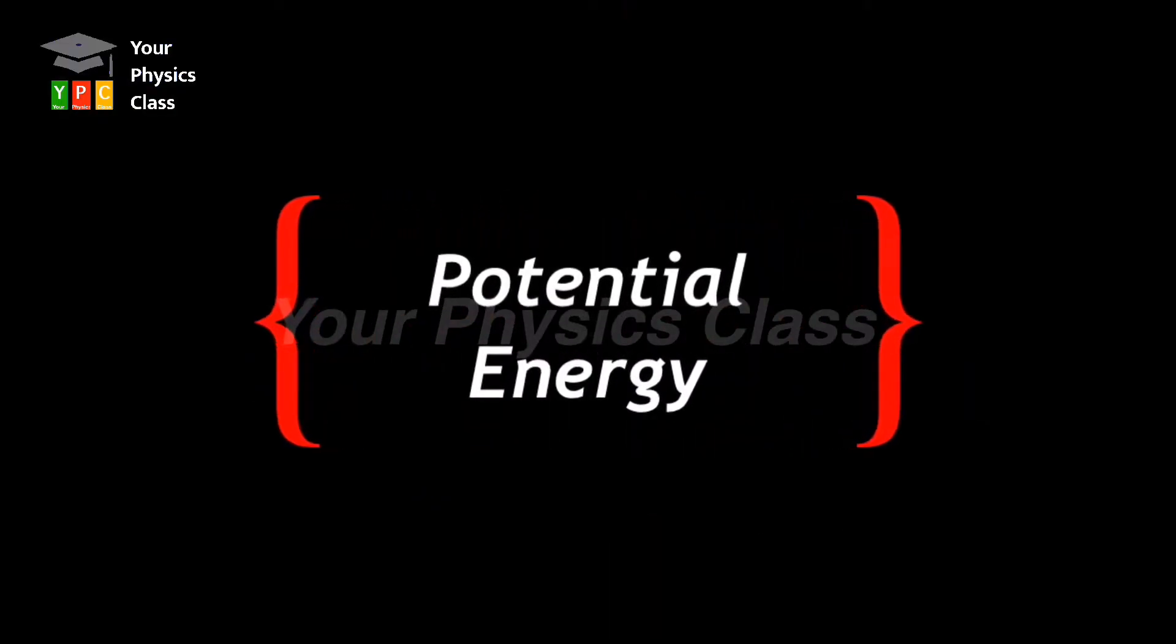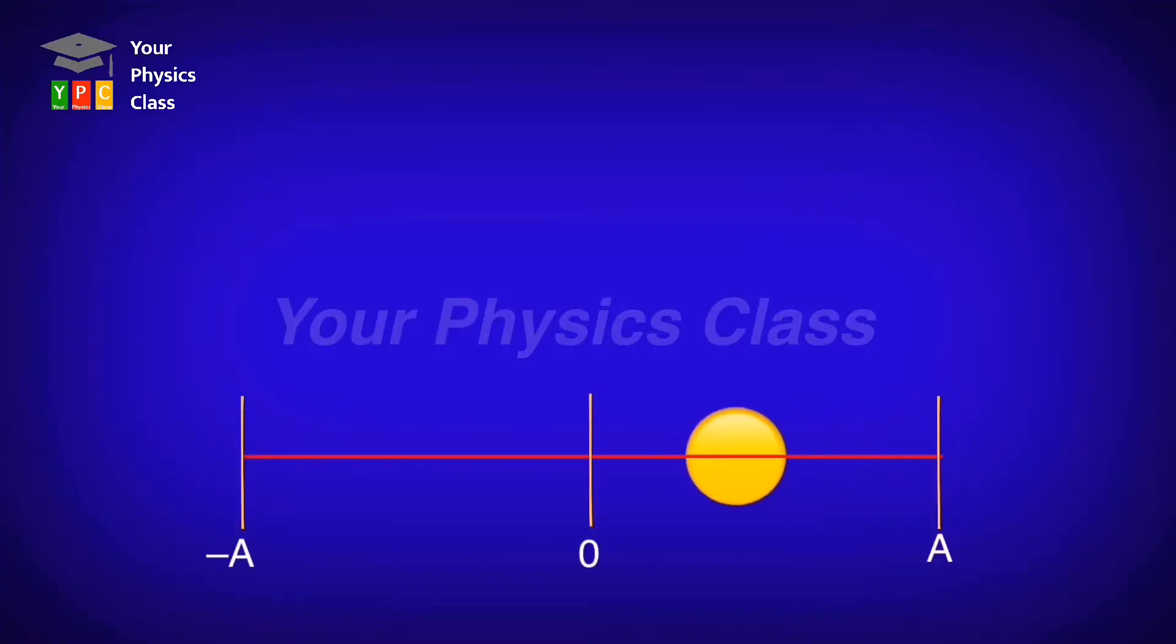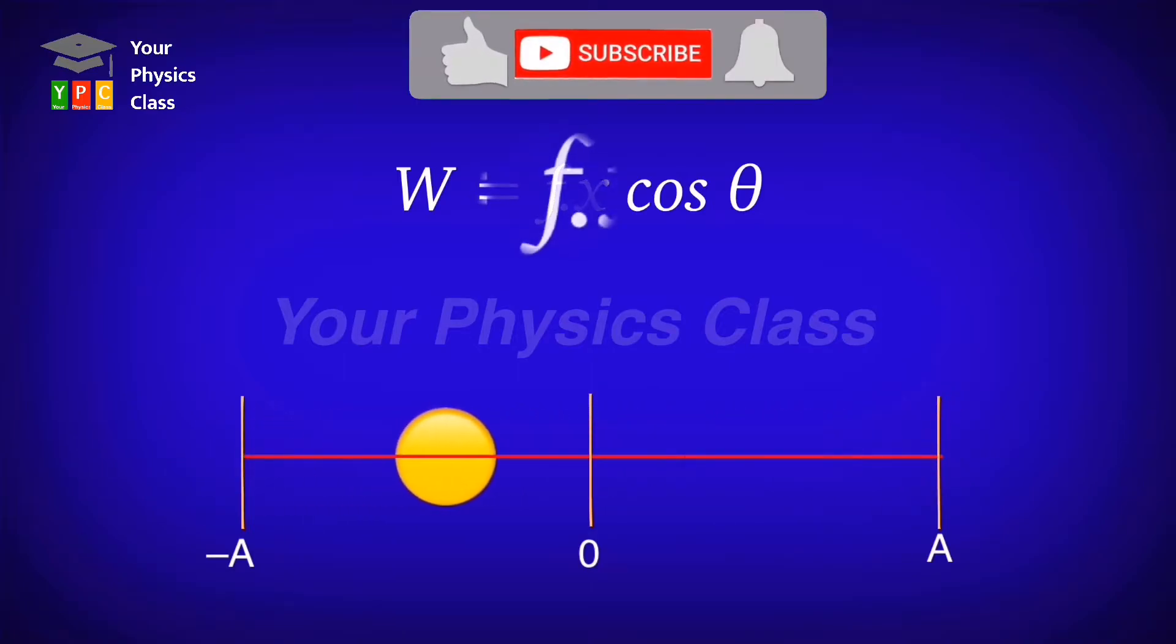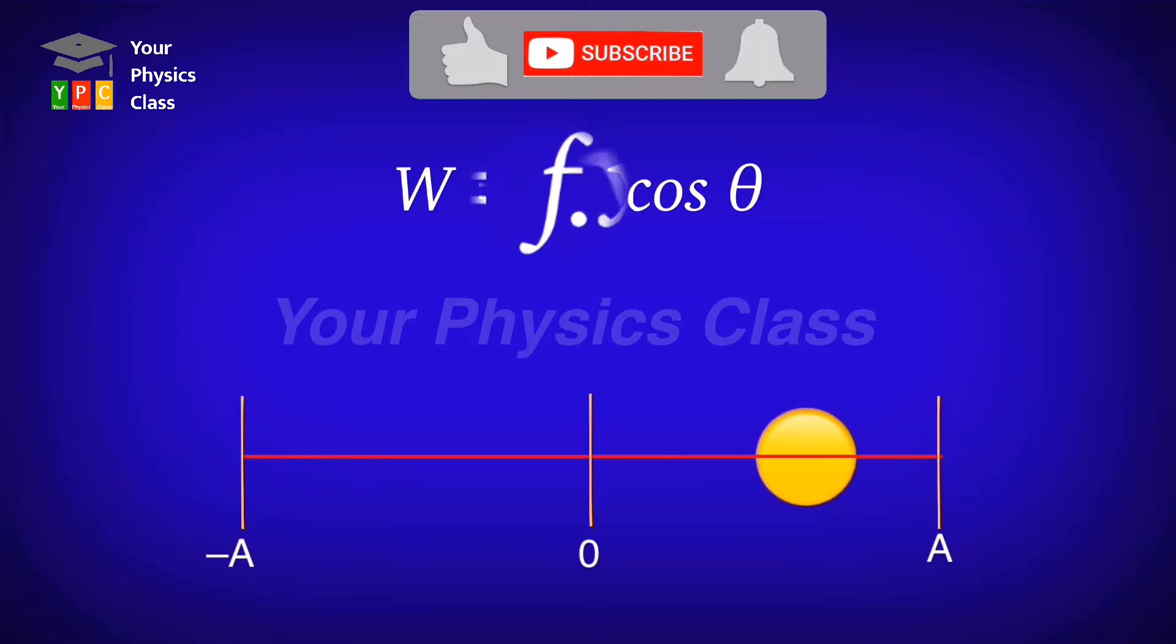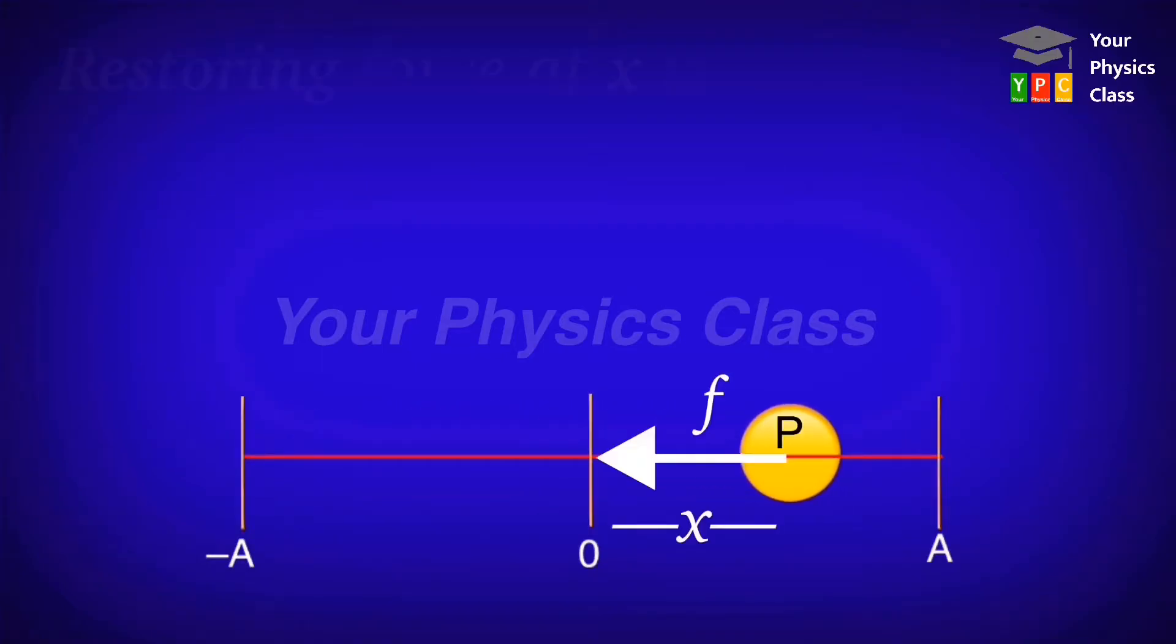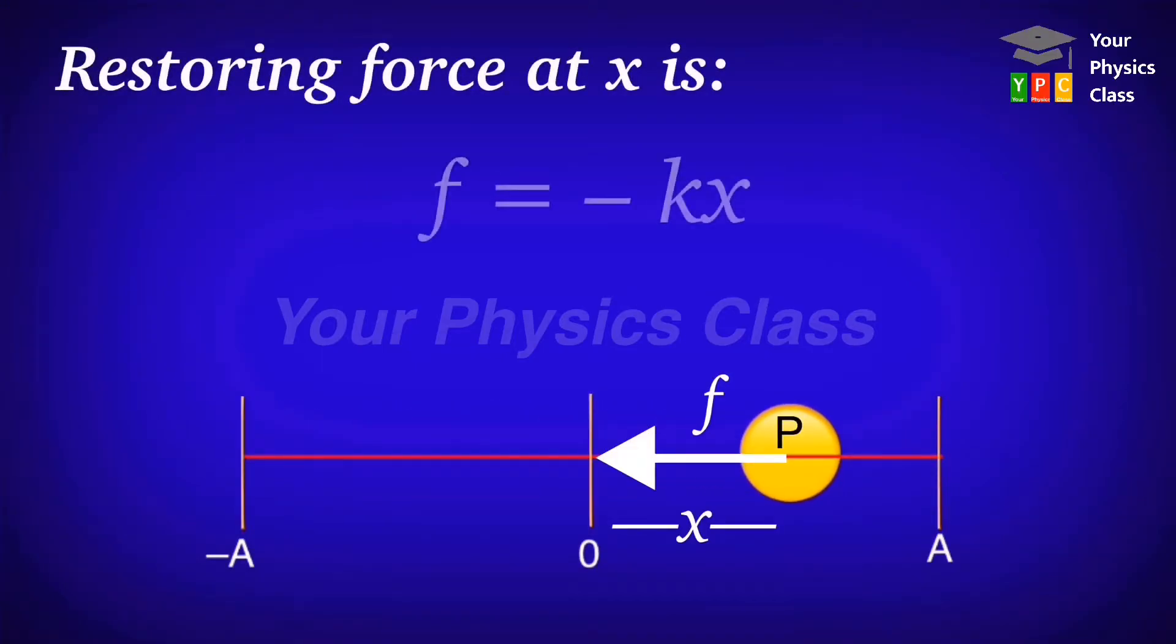Friends, now comes the turn of potential energy. To calculate potential energy, we have to calculate work done. And you know that to calculate work done, we need force and displacement. In SHM, the restoring force acting on a particle is always directed toward the center. Right? At this location x, the restoring force acting is f equal to minus kx. Here negative sign shows the force is directed toward center.